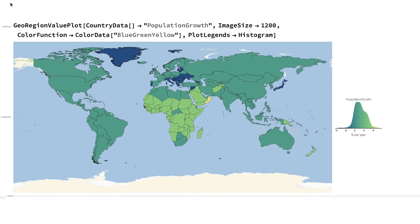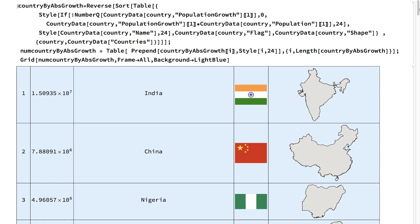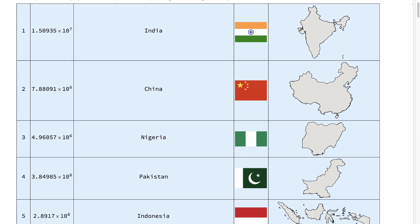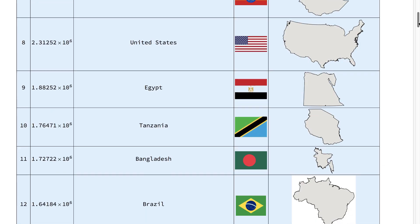These variations happen because of different populations and growth rates around the world. If you list these countries by growth rate times the population, India, China, Nigeria, and Pakistan add the most people per year. The US is 8th, and Mexico 13th.